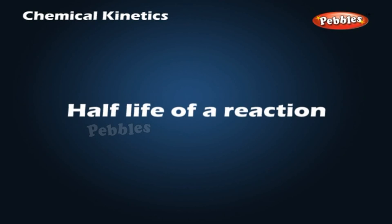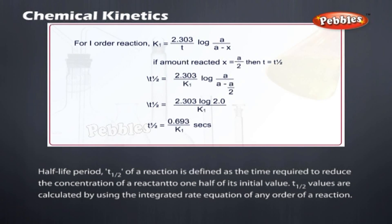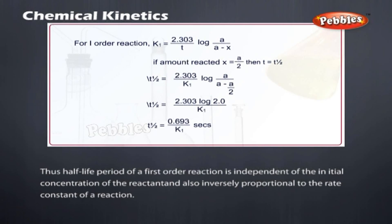Half-life of a reaction. Half-life period, T1/2, of a reaction is defined as the time required to reduce the concentration of a reactant to one-half of its initial value. T1/2 values are calculated by using the integrated rate equation of any order of a reaction. Thus, half-life period of a first-order reaction is independent of the initial concentration of the reactant and also inversely proportional to the rate constant of a reaction.